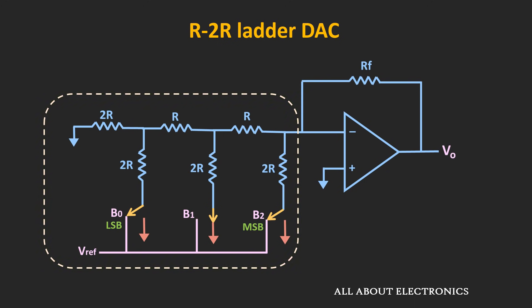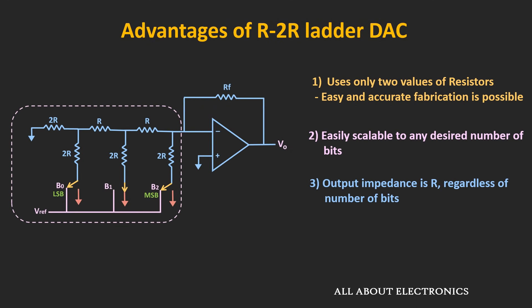This DAC has certain advantages. First, as it contains only two types of resistors, it is easy to fabricate them with good accuracy. Second, as it requires only two types of resistors, this circuit is easily scalable to any number of bits. Third, if you see the output impedance of this circuit — which is the Thevenin's equivalent resistance — it is equal to R, and regardless of the number of bits, this output impedance remains the same, so it will not affect other circuitry.